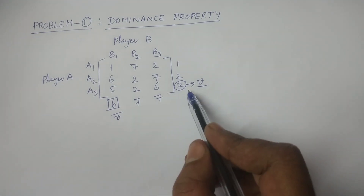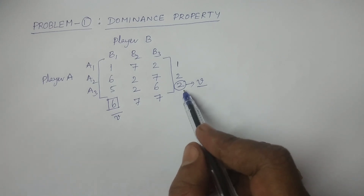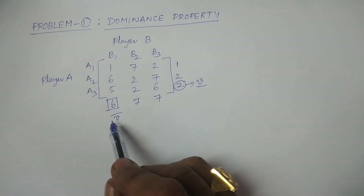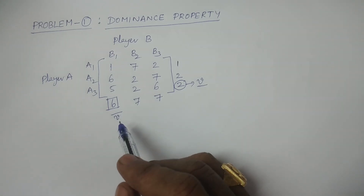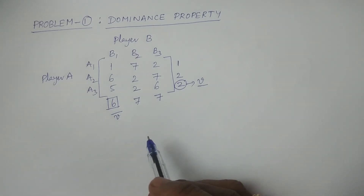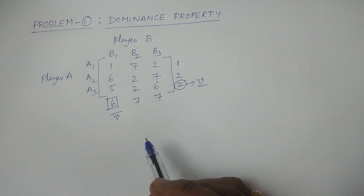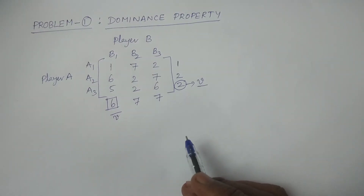Therefore, we can say that there is no saddle point because the maximin value is not equal to the minimax value — they do not coincide — therefore the saddle point does not exist for the given problem. Now you have to proceed and apply any method: either graphical method or dominance principle or any other kind of method. So now I am applying the dominance principle.